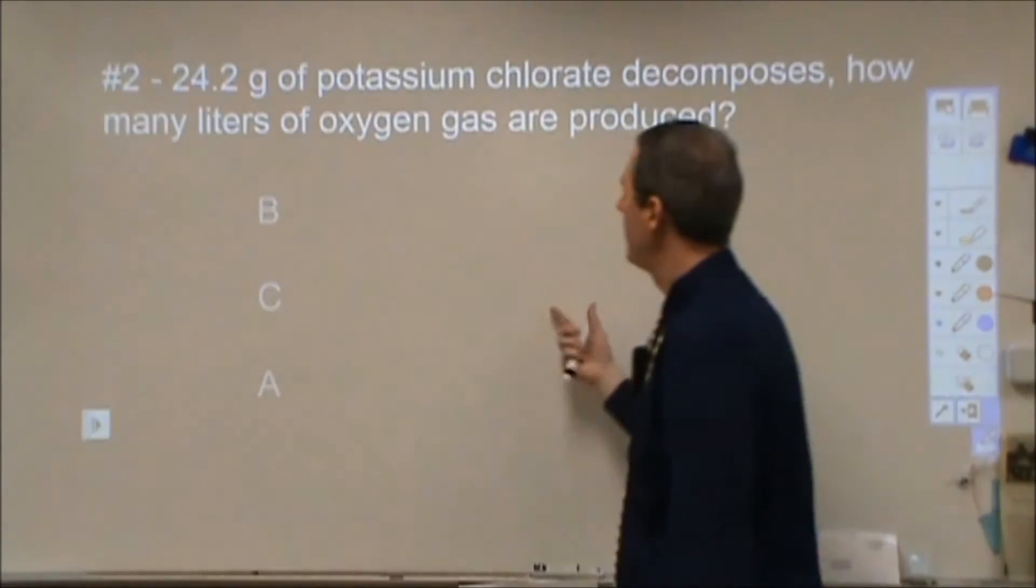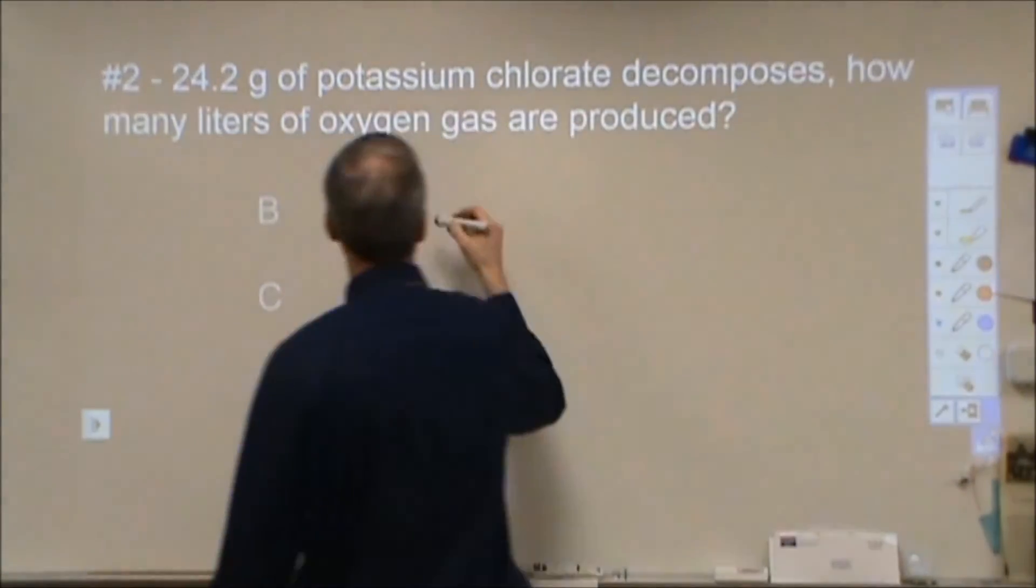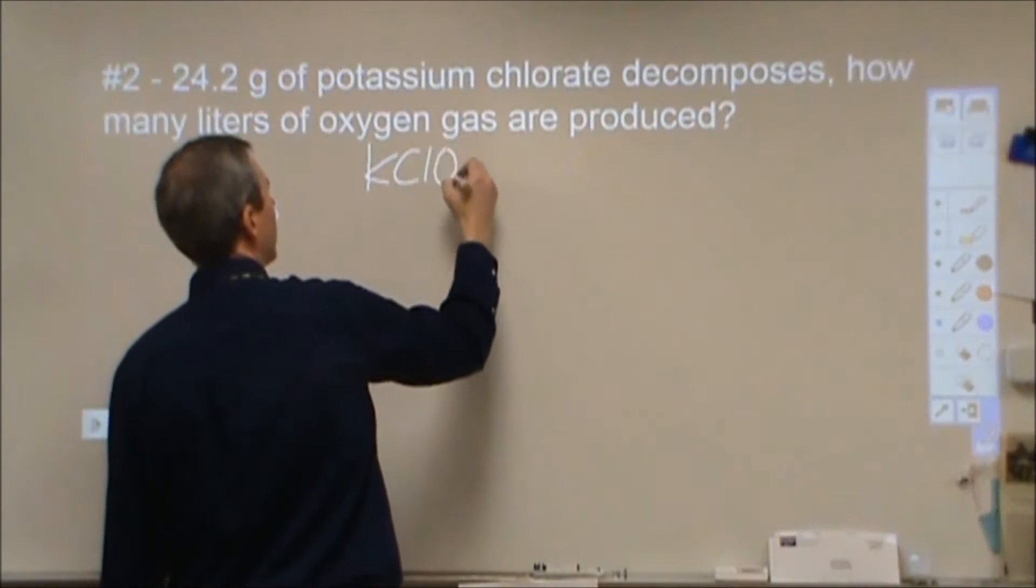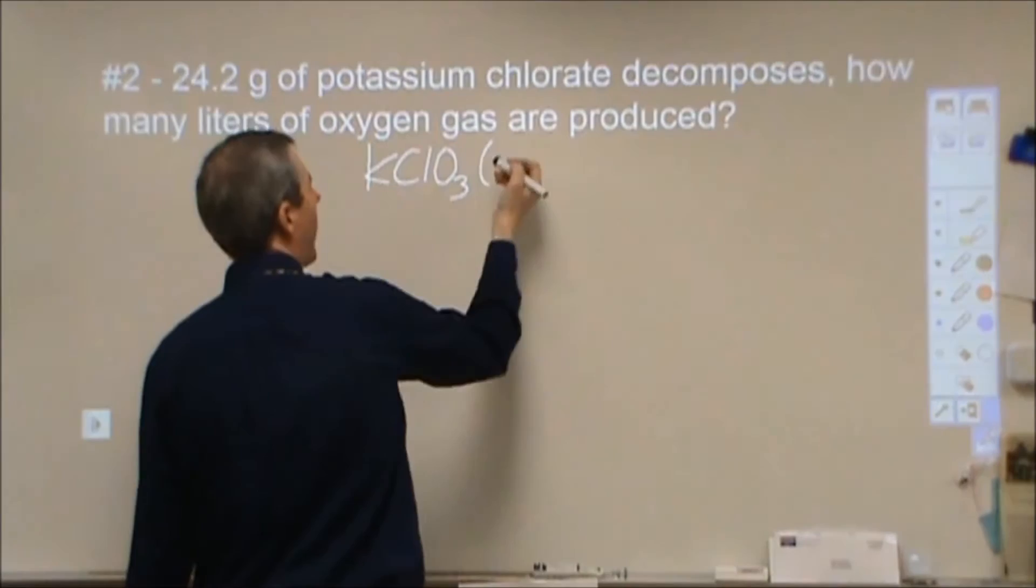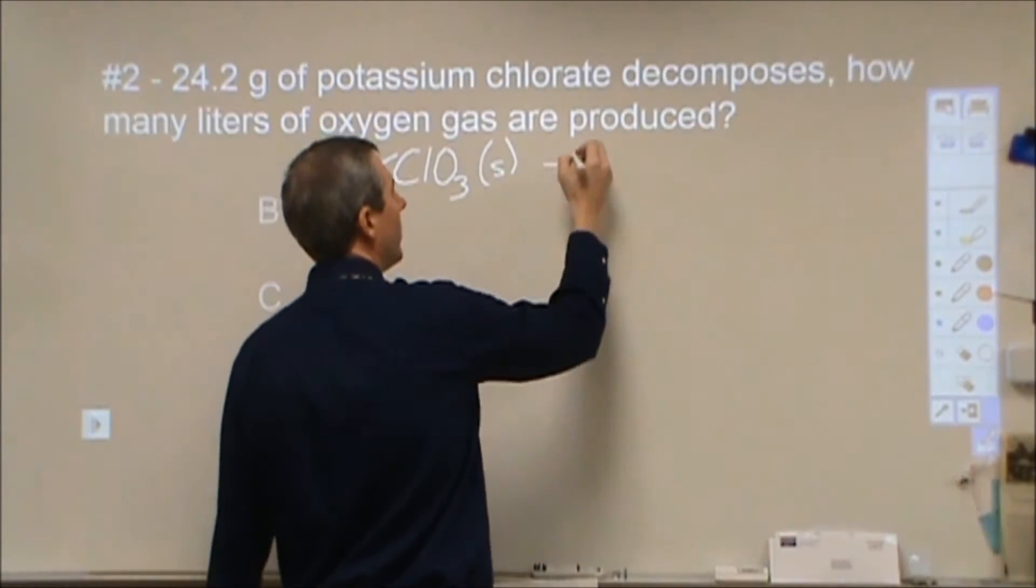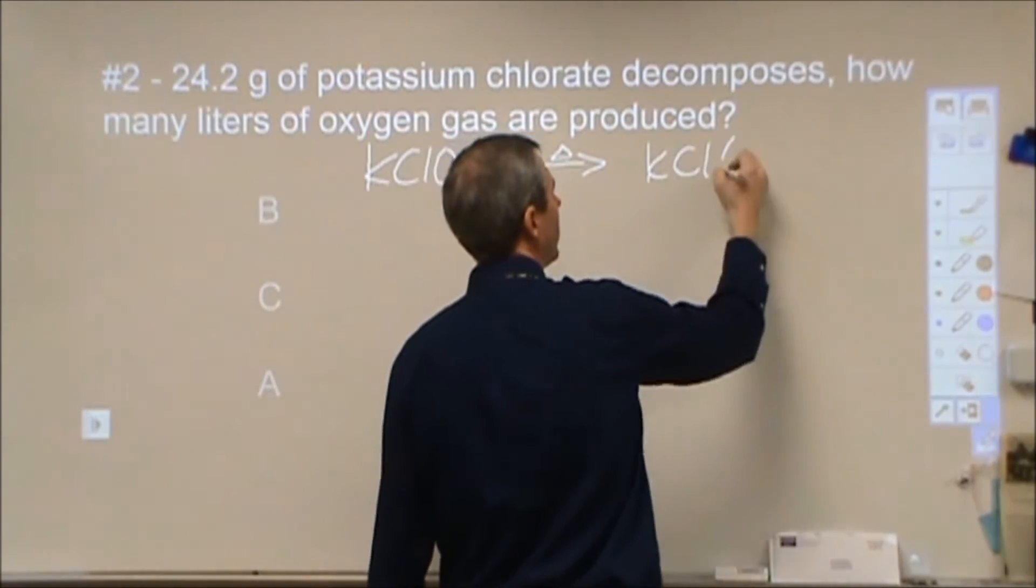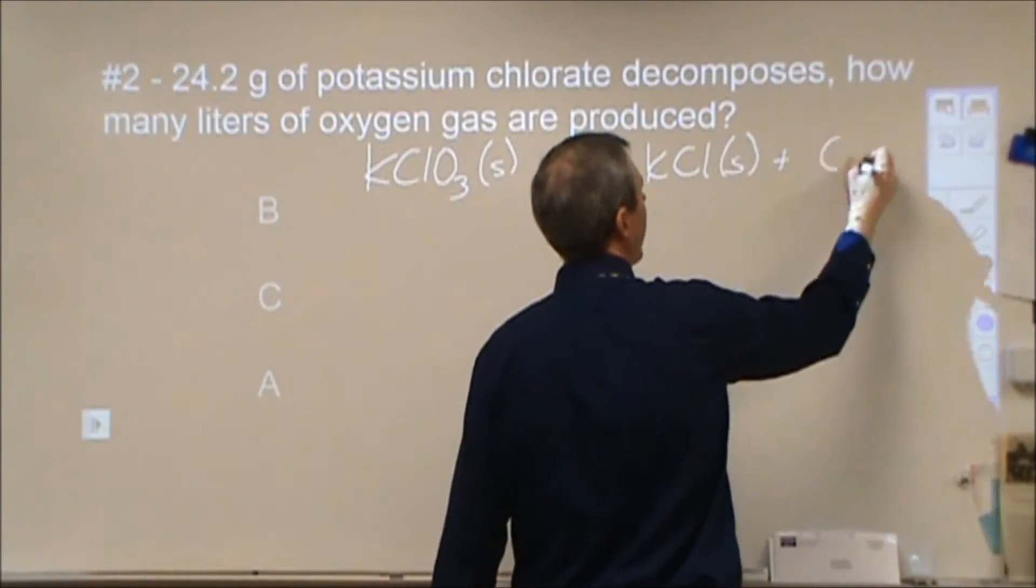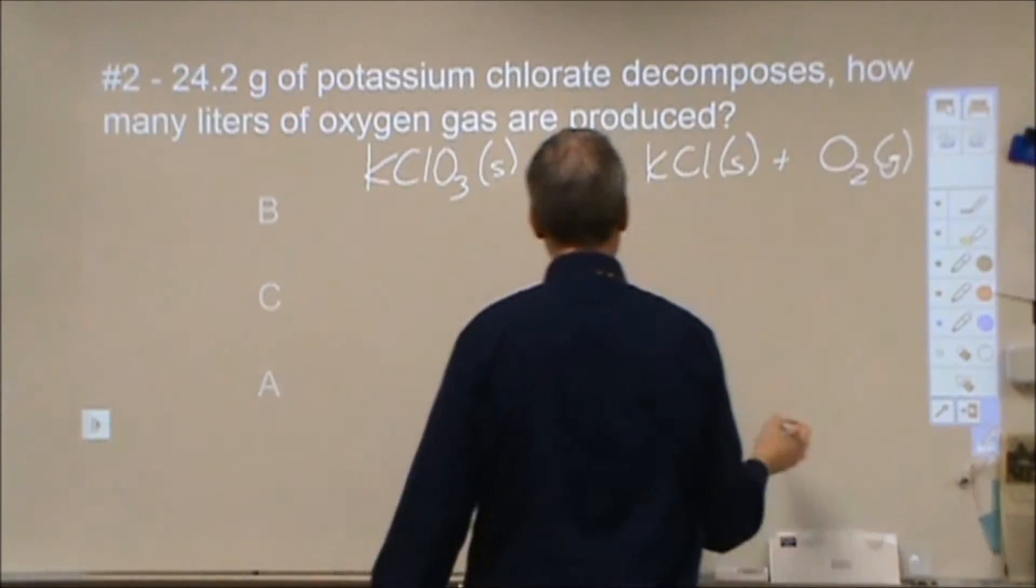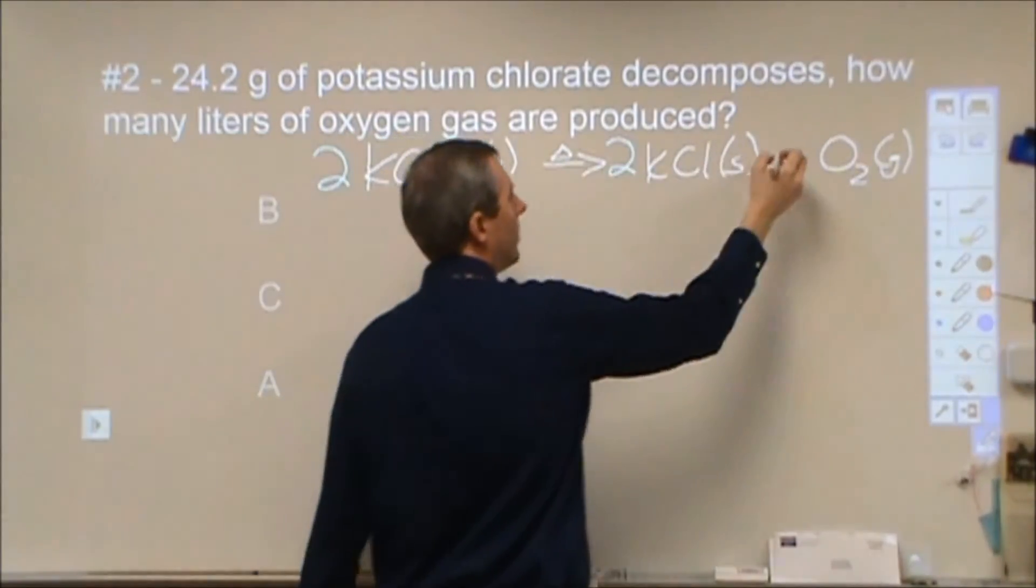Number two. We have potassium chlorate decomposing, how many liters of oxygen gas are produced. So potassium chlorate is KClO3, we can do solid or liquid here. It actually melts at a really low temperature. We're heating it up and we're going to produce potassium chloride solid and oxygen gas. To balance, we would need a 2, a 2, and then a 3.